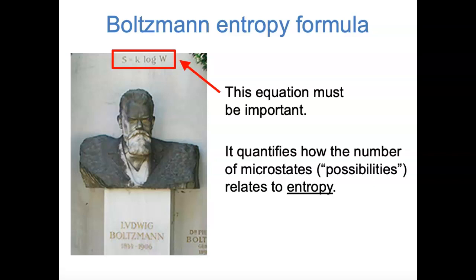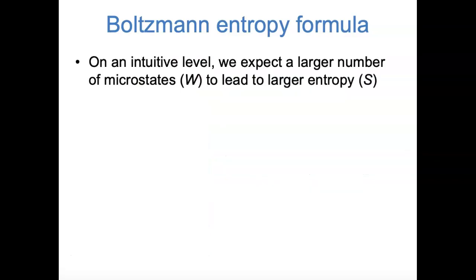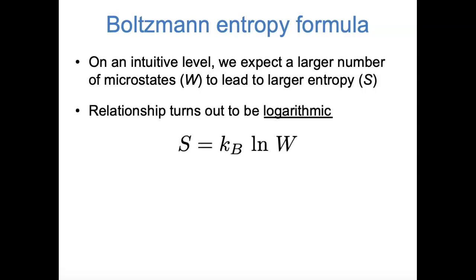We're not going to derive this equation, but we will try to make some sense of it. A larger number of microstates, a larger W, relates to a larger entropy S. This makes sense: when you first learn about entropy in general chemistry, you're taught to think about it as disorder. As we saw in our example, the macrostates that were more disordered — with objects on both sides of the container — were the ones that had more microstates associated with them. The Boltzmann entropy formula tells us that the relationship between entropy and microstates is logarithmic: entropy equals KB times the natural log of the number of microstates.